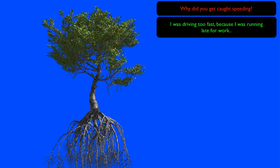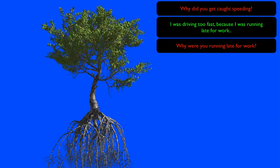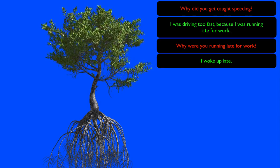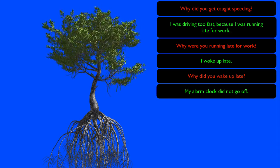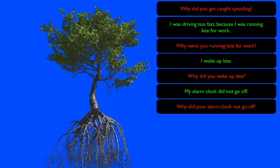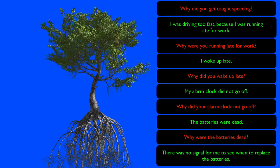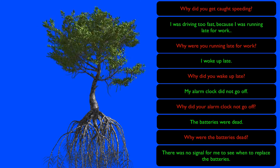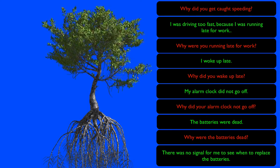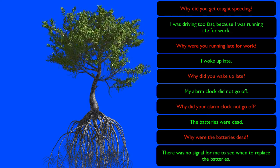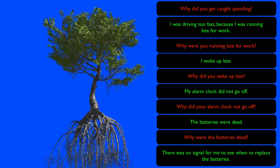In our example, it may look something like: Why were you running late for work? I woke up late. Why did you wake up late? My alarm clock did not go off. Why did your alarm clock not go off? The batteries were dead. Why were the batteries dead? There was no signal for me to see when to replace the batteries. As you can see, the final answer would offset or negate the effects that happened in the previous levels of causation.